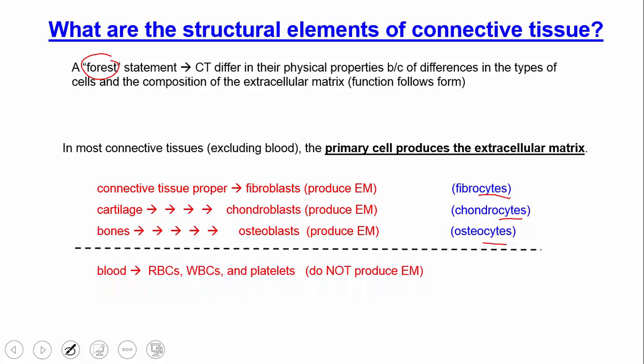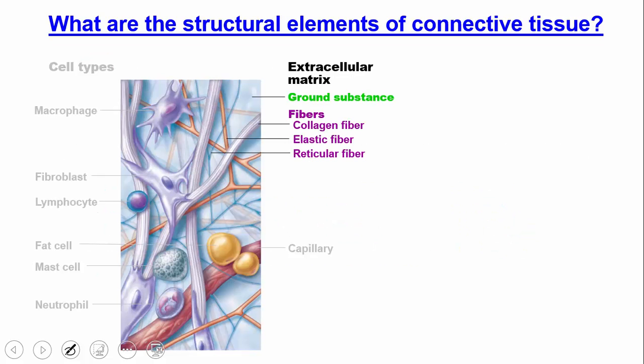Blood is the oddball. The primary cells in blood — red blood cells, white blood cells, and platelets — do not produce the extracellular matrix.